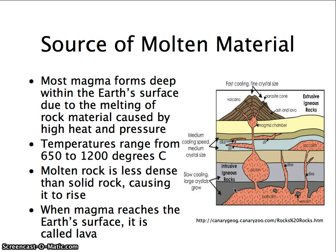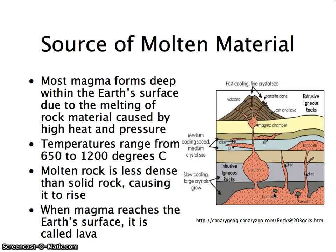The magma is under pressure, and there are only certain places within the Earth where the magma can come to the surface — whether that be at a plate boundary, which we'll talk about next unit, or in a location such as a volcano. When the magma does reach the Earth's surface, it is called lava.